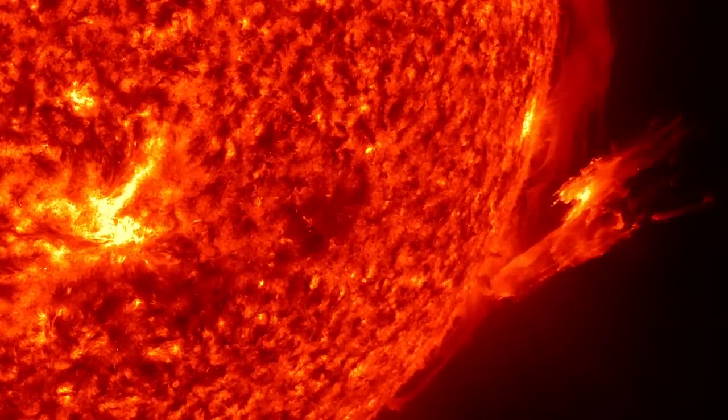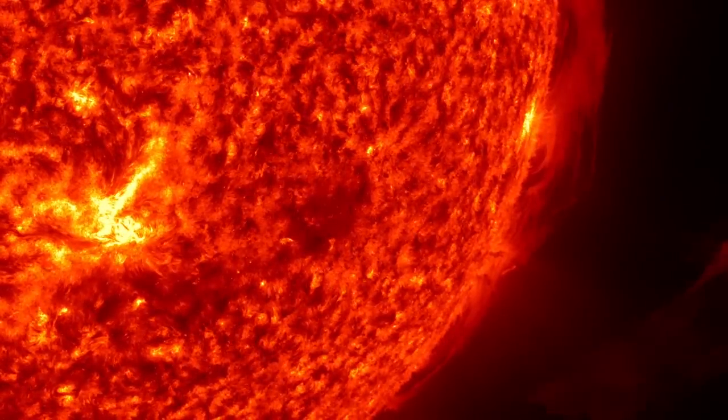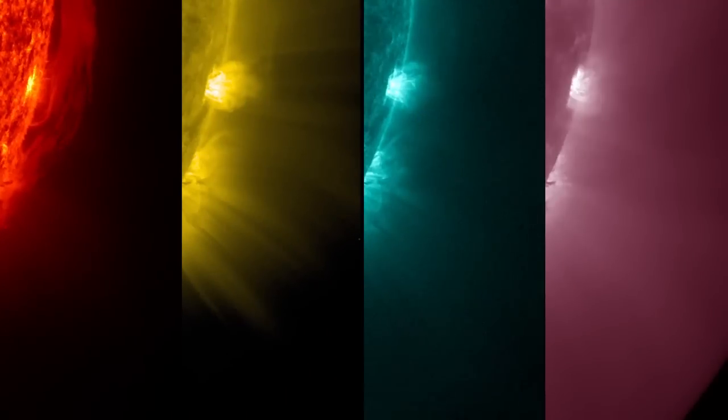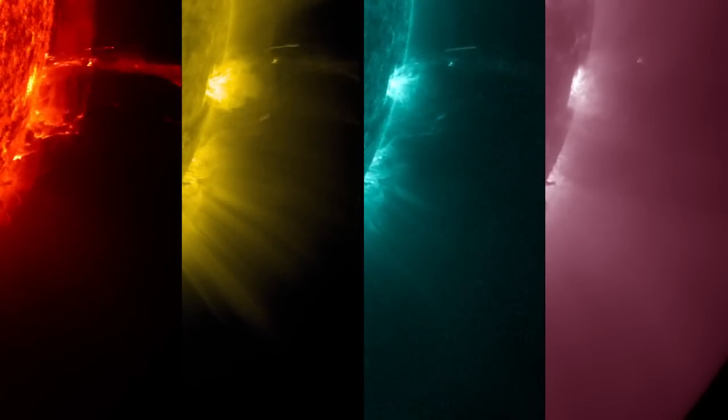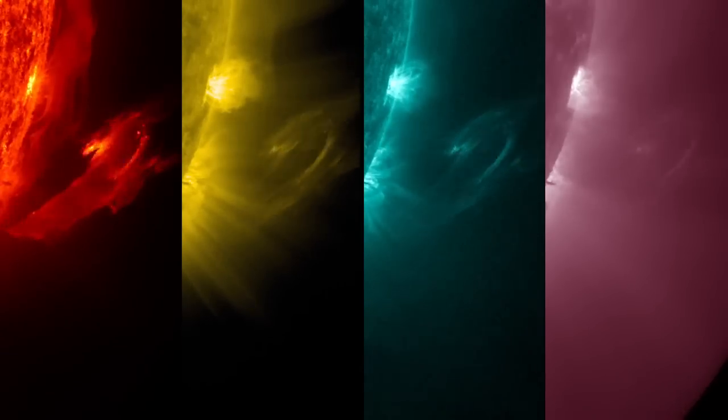The incredibly high-resolution view of the Sun provided by NASA's Solar Dynamics Observatory, or SDO, revealed the beginning of the eruption in several different wavelengths of ultraviolet light.